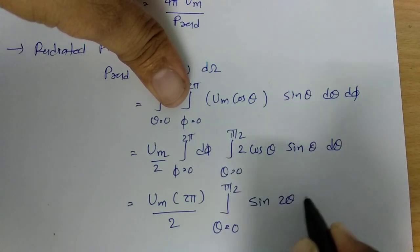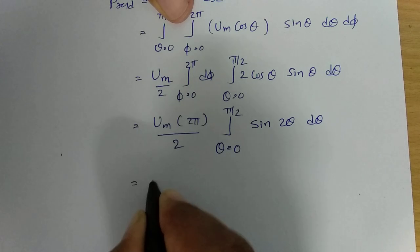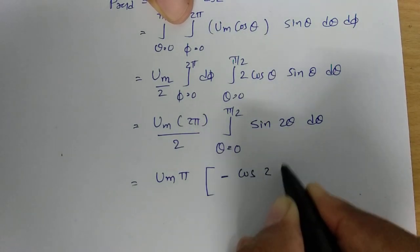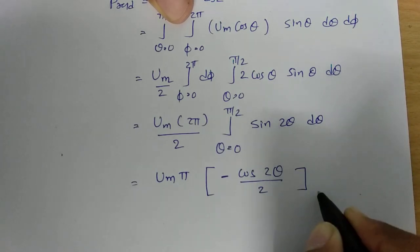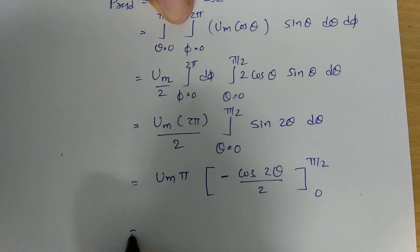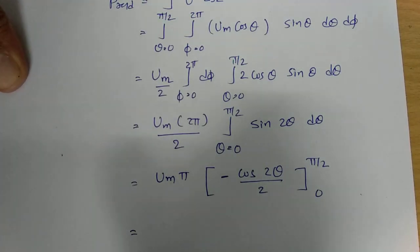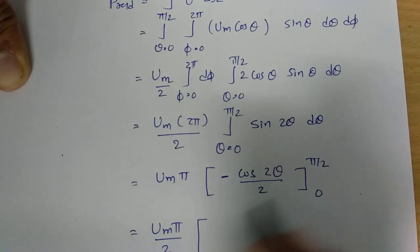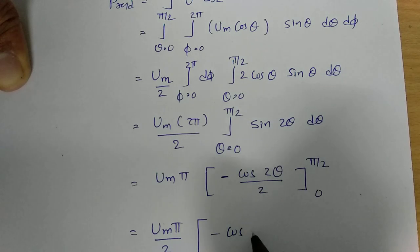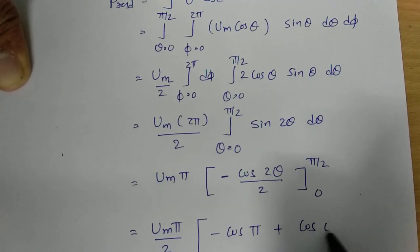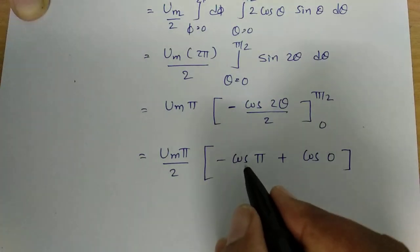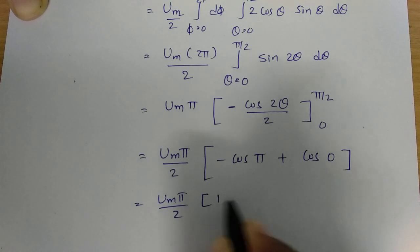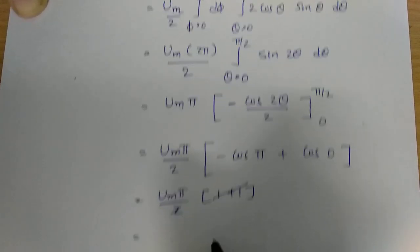For the θ integral of cos(θ)·sin(θ), multiply and divide by 2 to get (1/2)·∫sin(2θ)·dθ. The integral of sin(2θ) is −cos(2θ)/2, evaluated from 0 to π/2. Applying limits: −cos(π) + cos(0) = 1 + 1 = 2, so (1/2)·2 = 1. Therefore, radiated power equals Um·π.